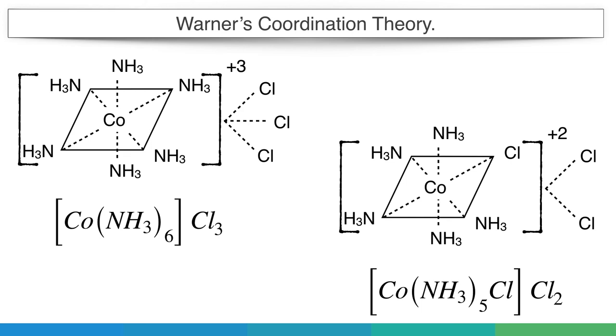Therefore, 1 chloride ion does the double function, since it is satisfying both primary and secondary valencies. I hope now you have understood the concept of primary and secondary valencies. So primary valency because of the oxidation state and secondary valency because of the coordination number. That's all about this Warner's coordination theory.